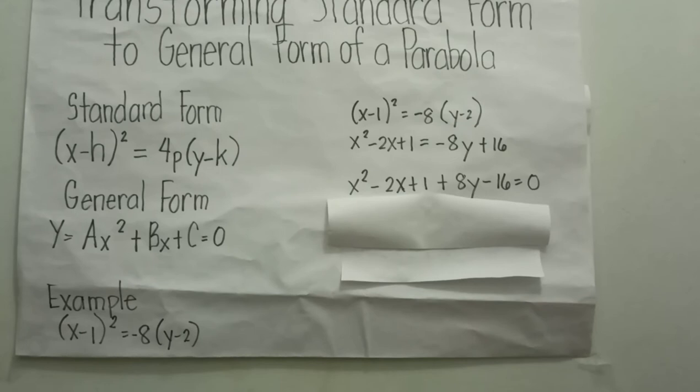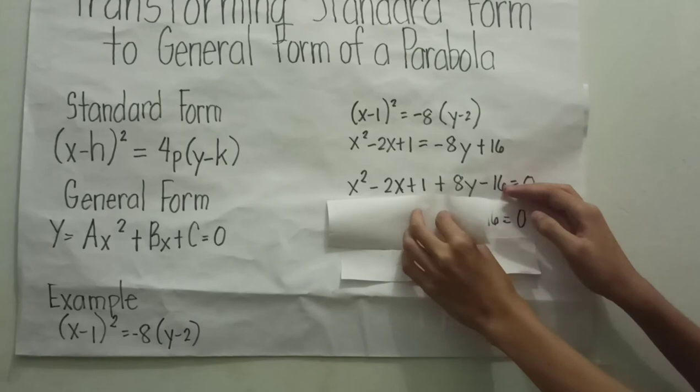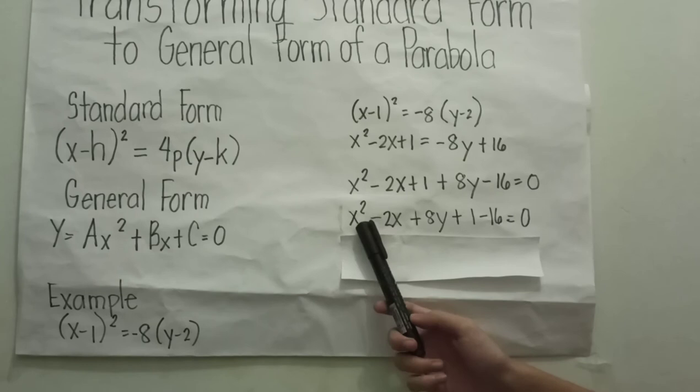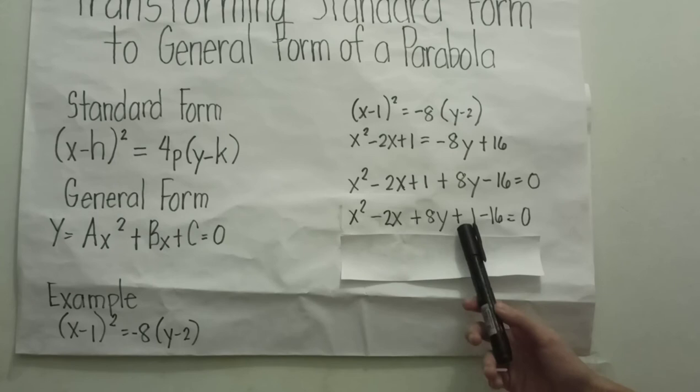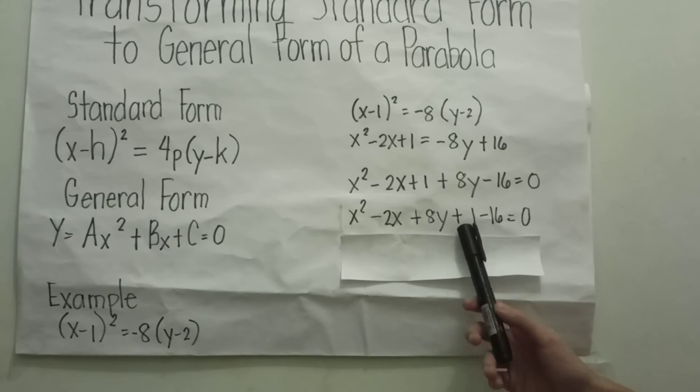Our next step is arranging and combining like terms. After arranging, our equation looks like this: x squared minus 2x plus 8y plus 1 minus 16 equals zero. Since 1 and 16 are like terms, we subtract them to get our final equation: x squared minus 2x plus 8y minus 15 equals zero.